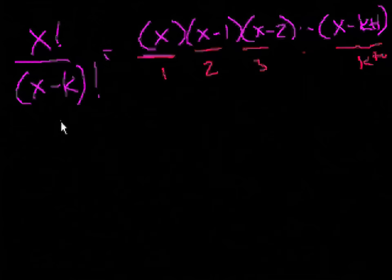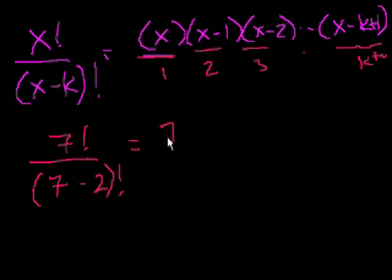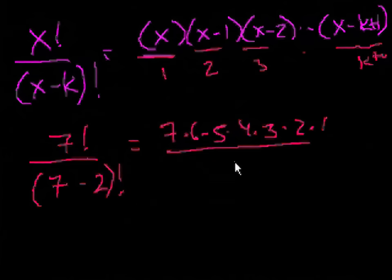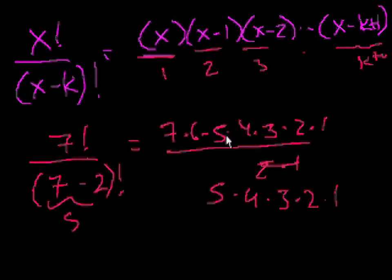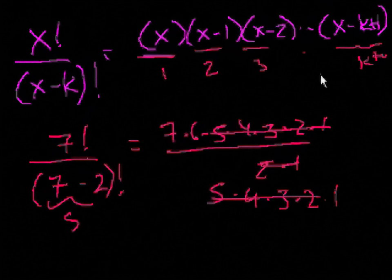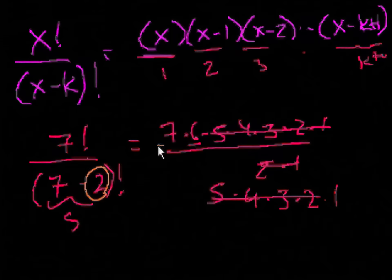But just to make this in real numbers, if I had 7 factorial over 7 minus 2 factorial, that's equal to 7 times 6 times 5 times 4 times 3 times 2 times 1 over 5 times 4 times 3 times 2 times 1. These cancel out. And you just have 7 times 6. And so it's 7. And then the last term is 7 minus 2 plus 1, which is 6. 7 minus 2 plus 1. And you had, in this example, k was 2, and you had exactly two terms.